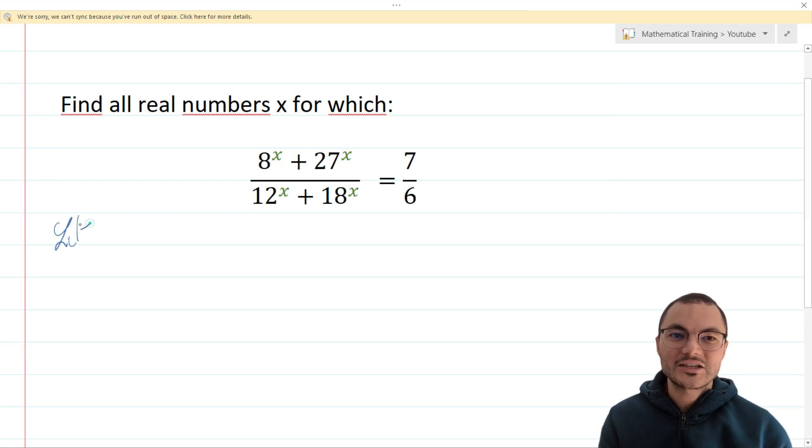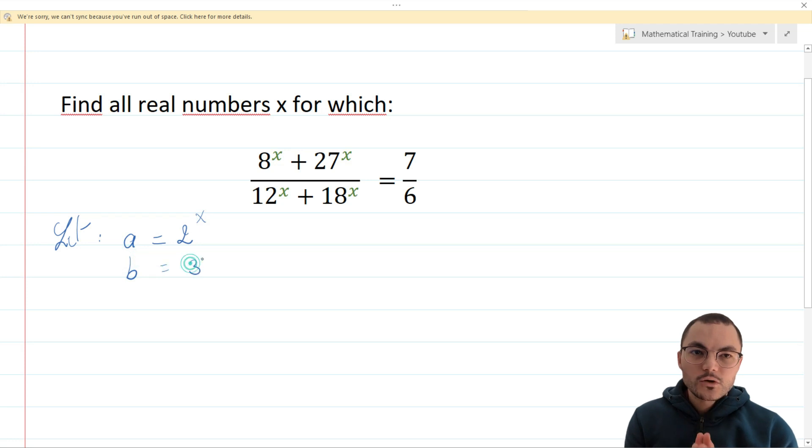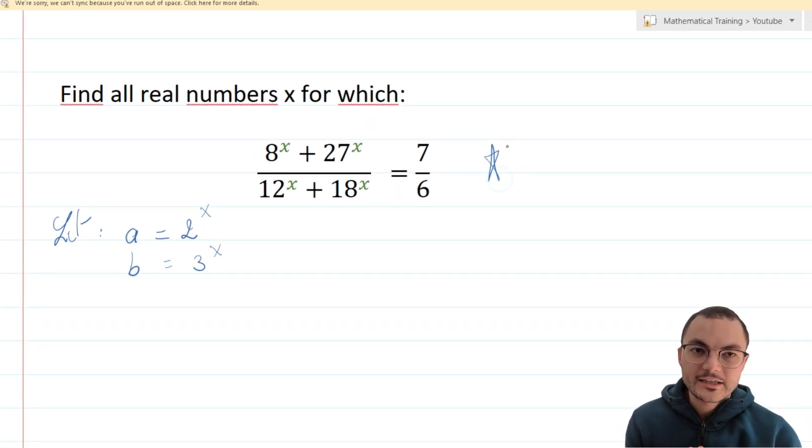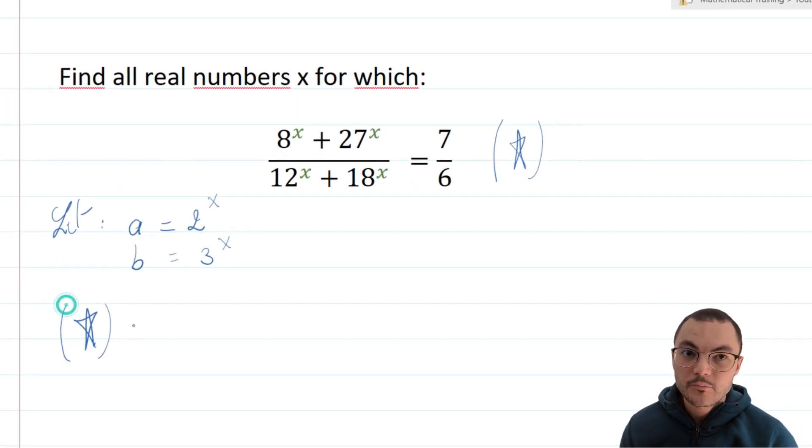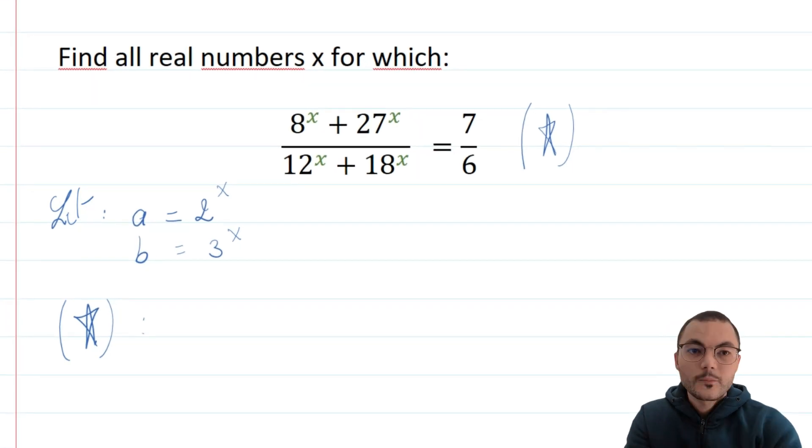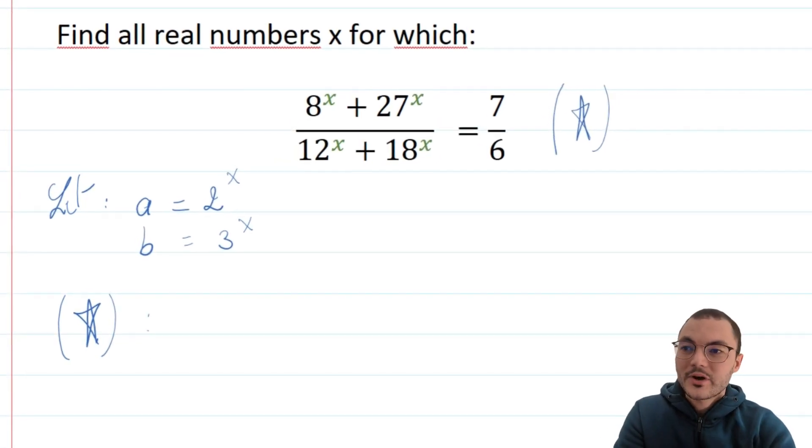With this in mind we will use a substitution technique to simplify the problem. Let a be equal to 2 to the power of x and let b be equal to 3 to the power of x.